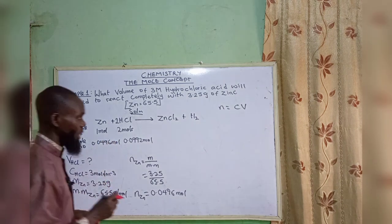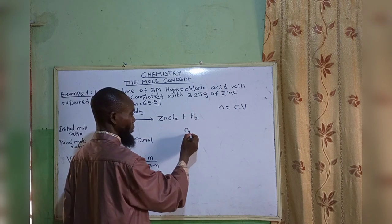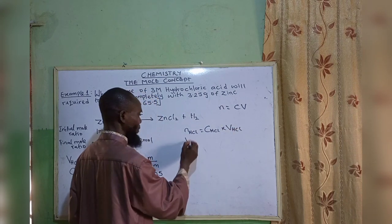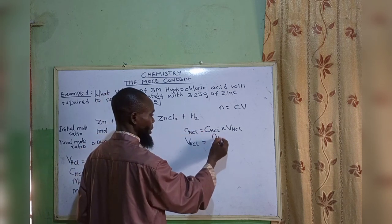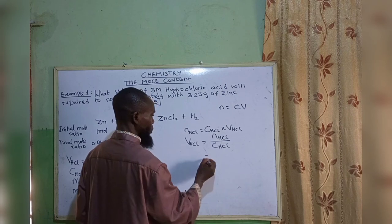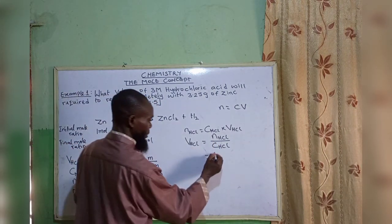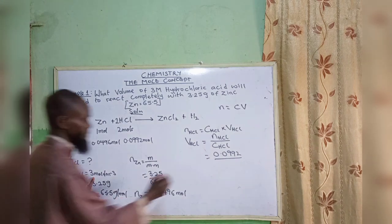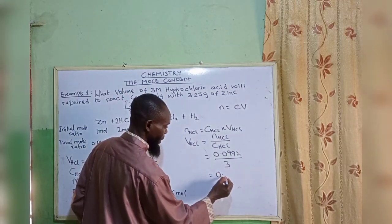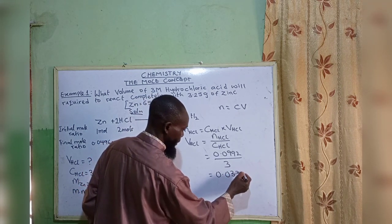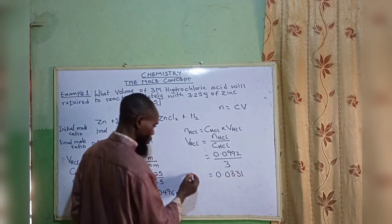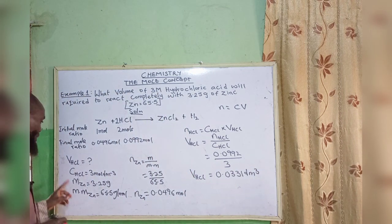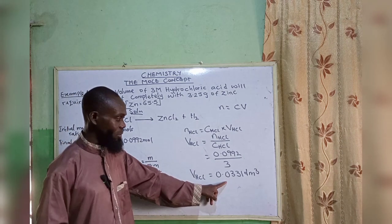Now we come to the formula: amount of HCl equals concentration of HCl times volume of HCl. Volume of HCl equals amount of HCl divided by concentration of HCl. So volume equals 0.0992 divided by 3, which gives 0.0330 dm³. The unit is dm³ because our concentration is in mole per dm³.